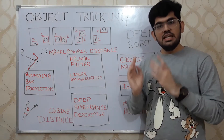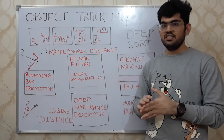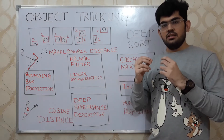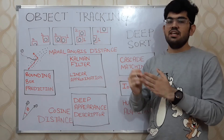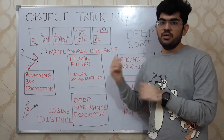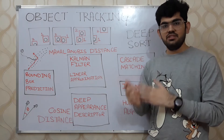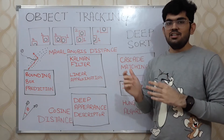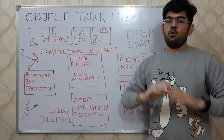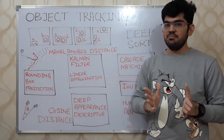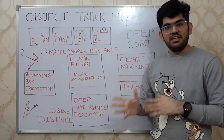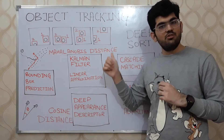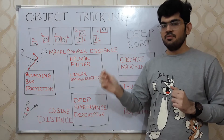The Kalman filter assumes a linear velocity model and generates predictions accordingly. Once we get the real data of where the object is, we input that back to the Kalman filter. It improves its predictions based on the real data and generates a new set of predictions, working in an iterative manner. As output, the Kalman filter does not output a single number — it outputs a probability distribution of where the object can be across a set of locations. Taking the maximum value of that distribution approximates where the object is going to be.